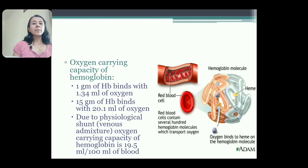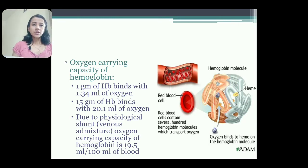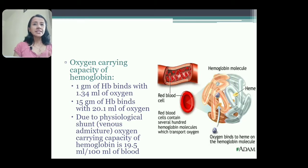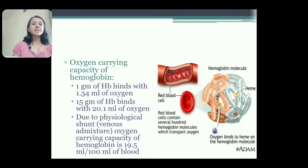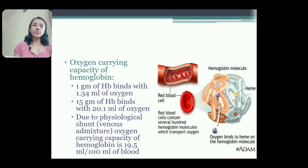This 20.1 ml is normal oxygen carrying capacity, but it is not reached because some amount of venous blood gets mixed — due to physiological shunt, or venous admixture. Bronchial blood which is deoxygenated gets mixed with the pulmonary veins which carry oxygenated blood. Because of this venous admixture, oxygen carrying capacity becomes 19.5 ml per 100 ml of blood instead of 20.1 ml.